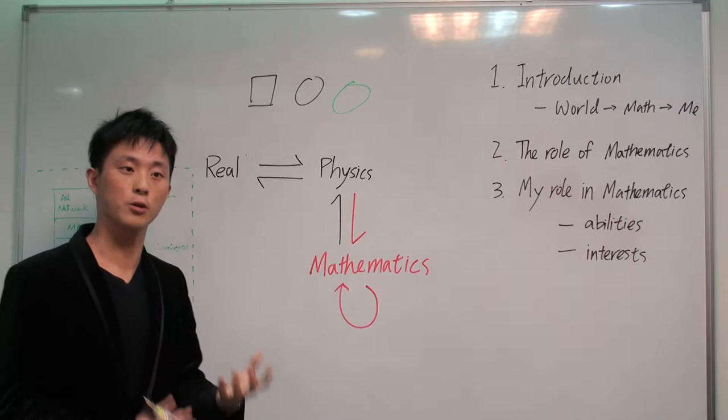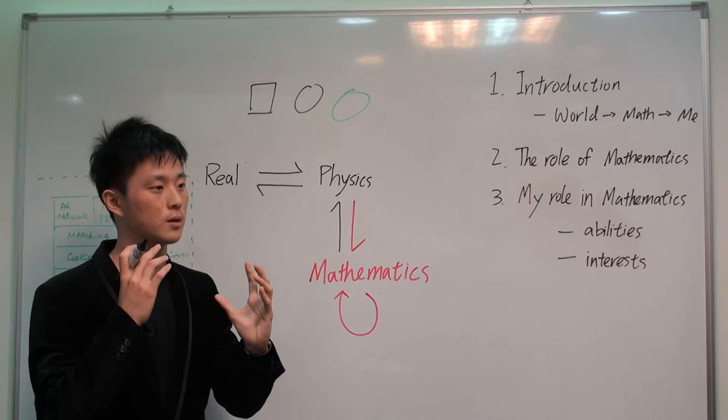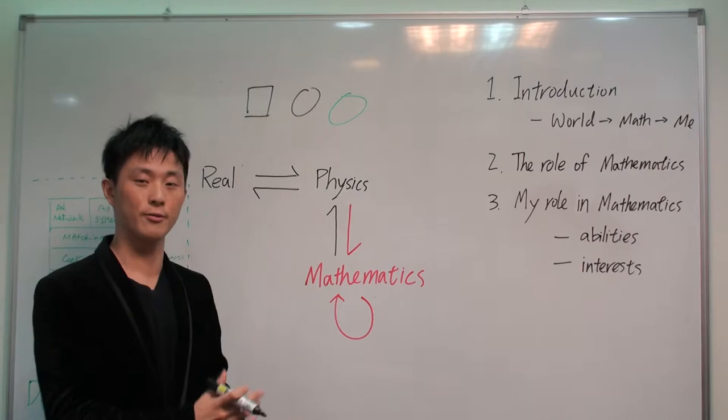And now everything becomes so abstract, but becomes so beautiful, so similar in this dimension, because everything is like a 3x3 matrix, just with different entries. And we're really familiar with numbers and things.